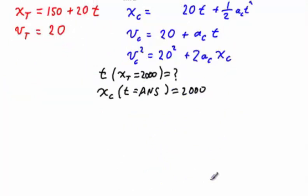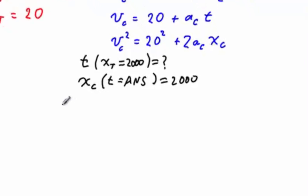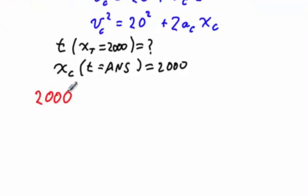First, to find when the train reaches the finish line, we use the relationship between x of the train and time, which is the first equation on the left. Plugging in 2,000 for the position of the train, we will find that that must be equal to 150 plus 20 times the time.